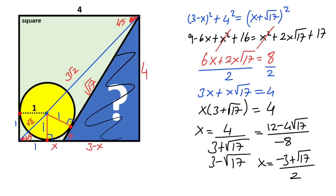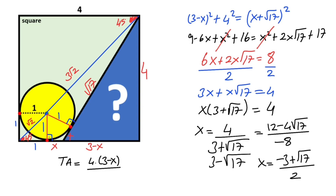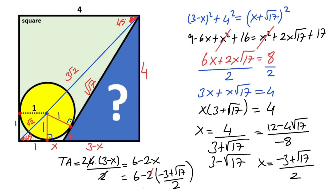Now we can calculate the area of the triangle. Triangle area equals 4 times (3 minus x) over 2, which equals 6 minus 2x. We know x equals (minus 3 plus root 17) over 2, so substituting: triangle area equals 9 minus root 17 square units. That was the first method.